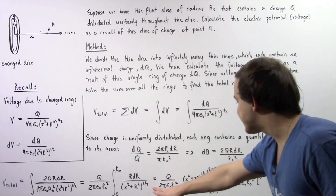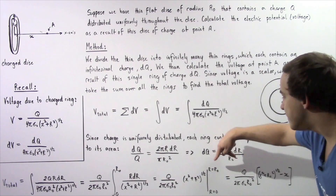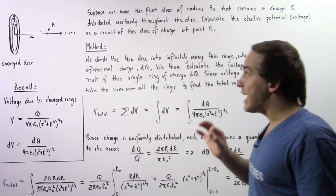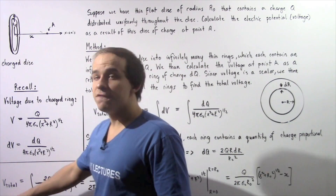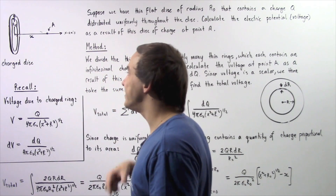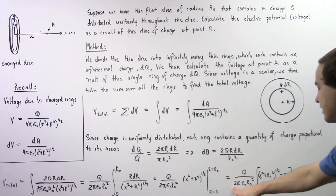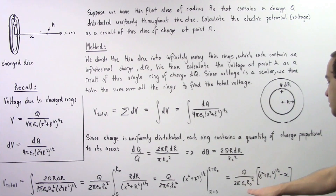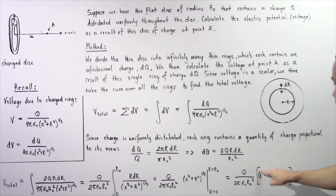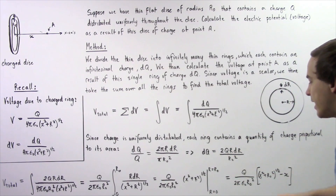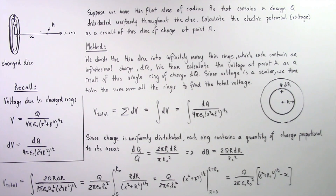We evaluate our integral and get the result. The total voltage at point A as a result of a disk of uniform charge is equal to Q divided by 2π epsilon-naught R0 squared, multiplied by the quantity: the square root of x squared plus R0 squared minus x. Note that r becomes R0 because we evaluate from 0 to R0.